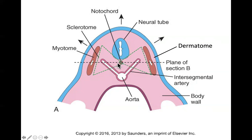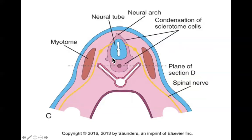Sclerotome tissue from the somite is going to start condensing and proliferating. As it condenses and proliferates, it's going to grow up and around the neural tube until finally it meets in the middle up here. Interestingly enough, this whole process happens through differential tissue growth. Eventually, we're going to end up with something like this by about week five. Notice that this nerve has already gone out — it went out in week four to whatever tissue it's going to affect. It is going to follow that tissue wherever in the body it goes.